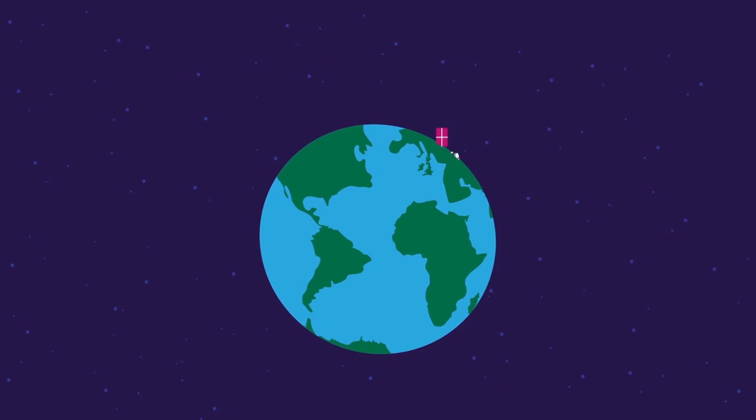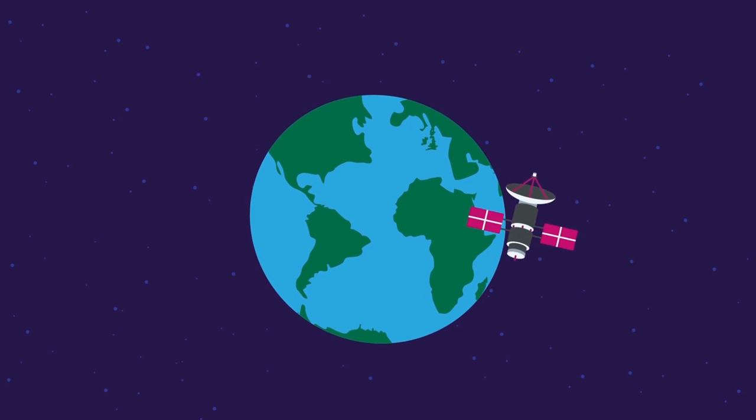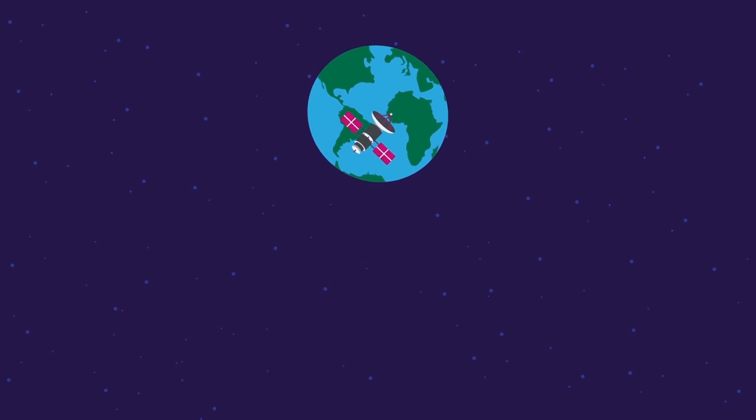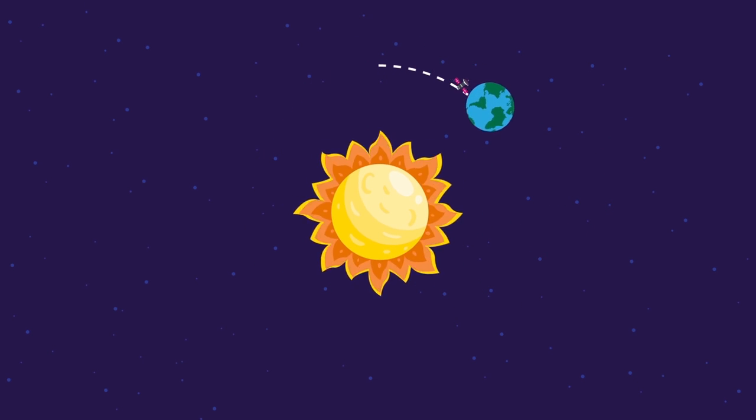In reality, this is how artificial satellites are launched and orbit the Earth. This is also why the Earth is in orbit around the Sun.